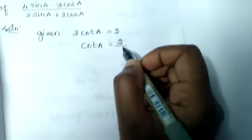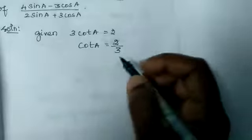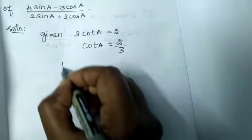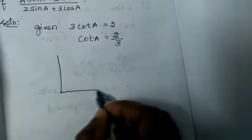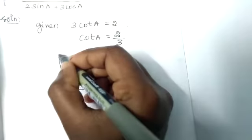Now using a right angle triangle, we are going to find the other values sinA and cosA.